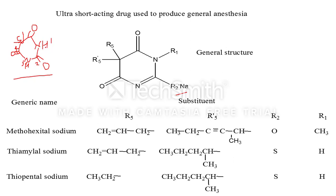At position one, some alkyl groups such as methyl groups are substituted, as in methohexital. At position two, more lipophilic groups — oxygen or sulfur — are substituted. At position three, there are no substitutions but the nitrogen-carbon bond shifts to produce a double bond. Positions four and six have no substitutions. At position five, alkyl or isopentyl groups are substituted to produce ultra-short-acting barbiturates with high lipophilicity.